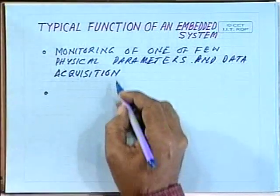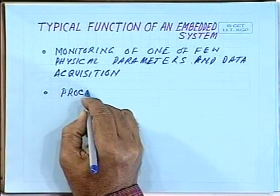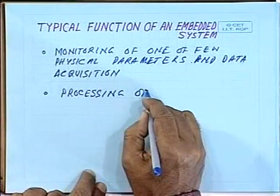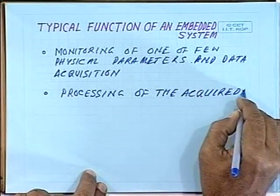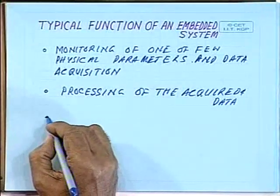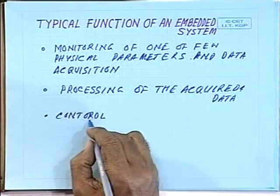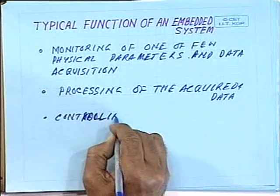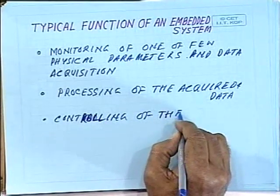After data acquisition is done, the second operation that an embedded system performs is processing of the acquired data. Inside the microcontroller, you have the CPU and memory. The acquired data is stored in memory and then processed with the help of the CPU. Then the third operation is controlling — controlling of the physical parameters.